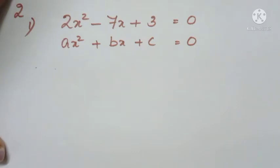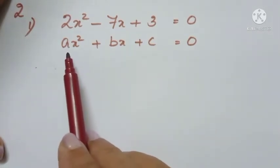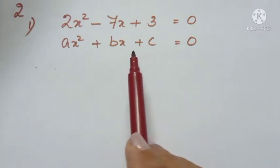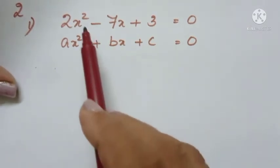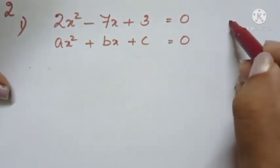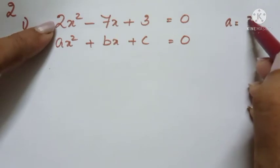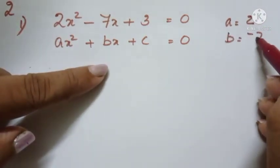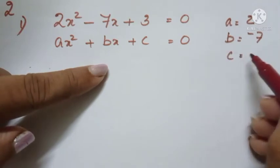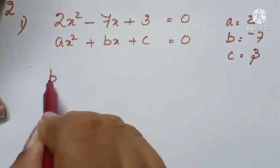For using the quadratic formula, we have to compare it with the standard form of the quadratic equation, which is ax² + bx + c = 0. When we compare both equations: a is the coefficient of x², that is 2; b is the coefficient of x, that is -7; and c is the constant term, that is 3.